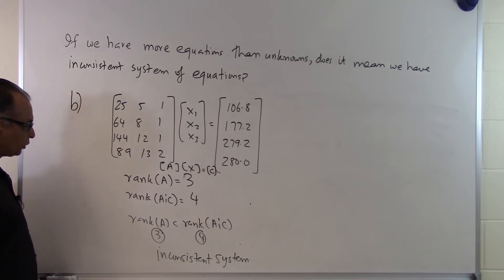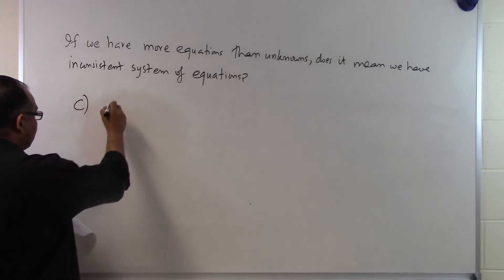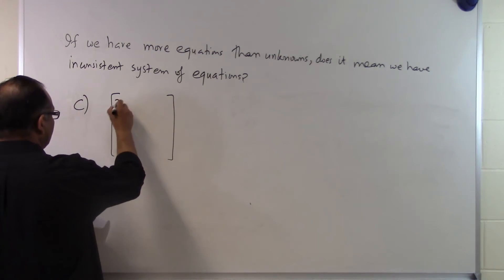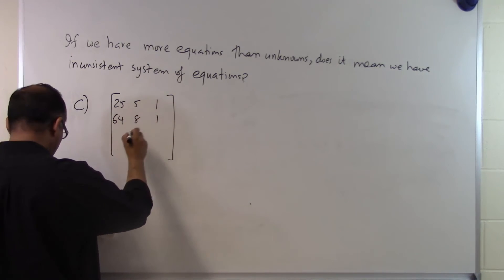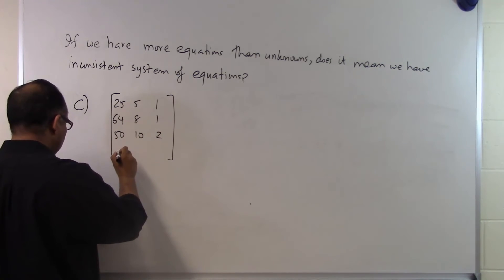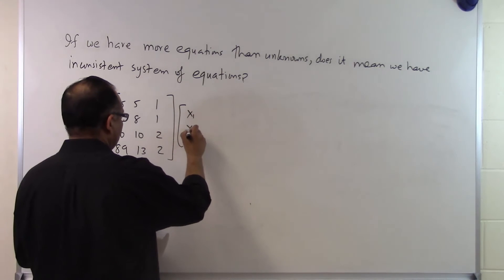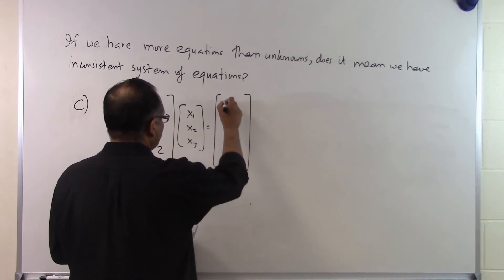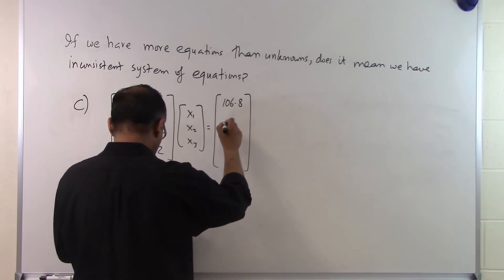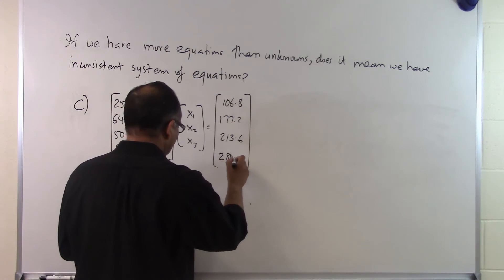Let's look at a third example to further explore what it means when we have more equations than unknowns. Somebody gives us a coefficient matrix with entries 25, 5, 1 / 64, 8, 1 / 50, 10, 2 / 89, 13, 2, and unknown vector x1, x2, x3, equal to right-hand side 106.8, 177.2, 213.2, 213.6, and 280.0.